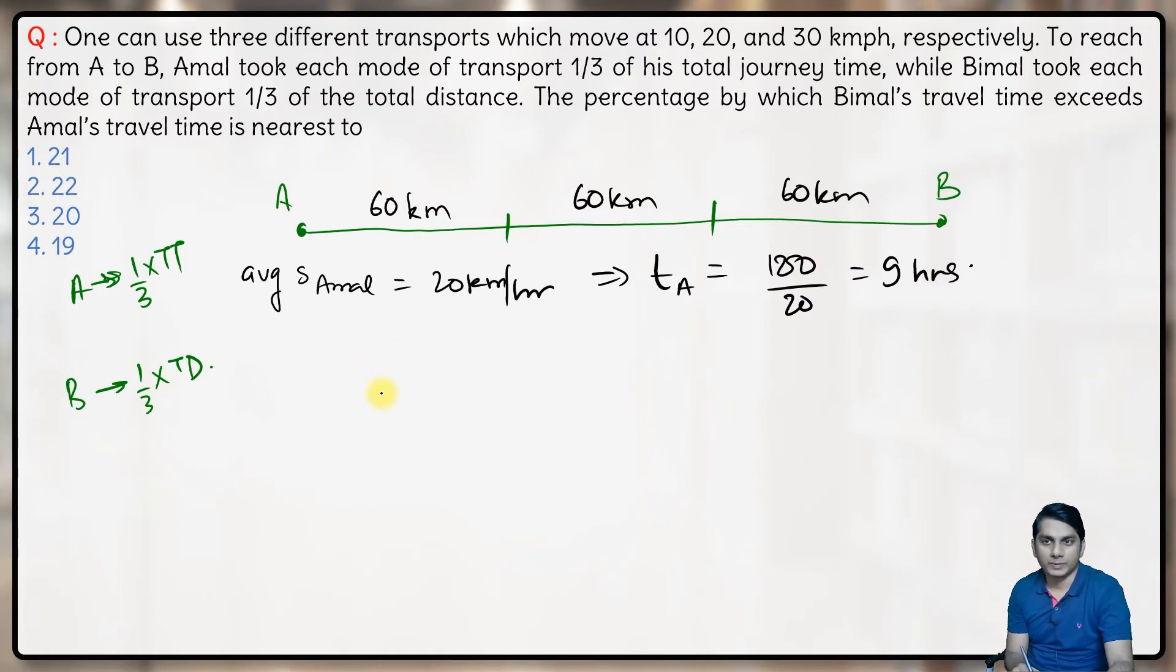Now let's calculate time taken by Bimal. Bimal travels 60 kilometers at each of these speeds. So in the first part, time taken will be 60 divided by 10, which is 6 hours. In the second part, time taken will be 60 divided by 20, which is 3 hours.